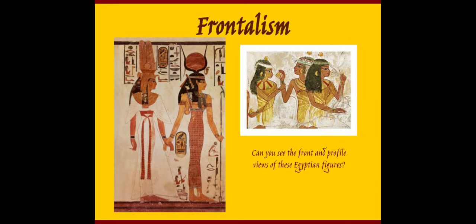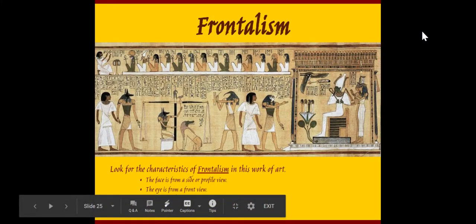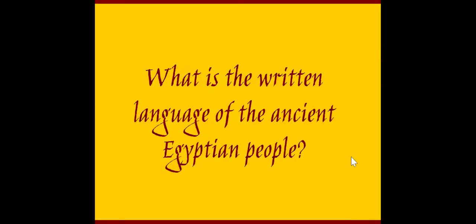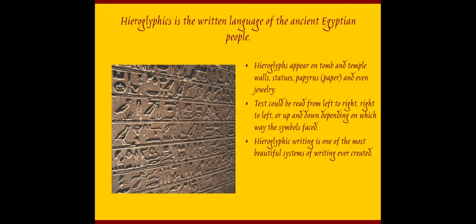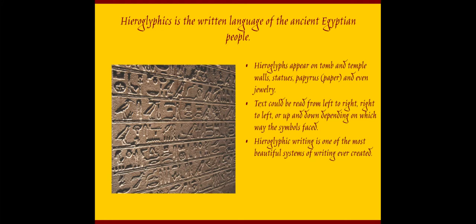After looking at some of these examples, you can definitely see the front and profile views of these Egyptian figures. So let's go on and talk a little bit about the written language. Hieroglyphics is the written language of the ancient Egyptian people. Hieroglyphics appear on the paintings, on tombs, on temple walls, statues, papyrus — which is paper — and even jewelry. The text could be read from left to right, right to left, up and down, depending on the way the symbols face — somewhat similar in direction to Japanese.